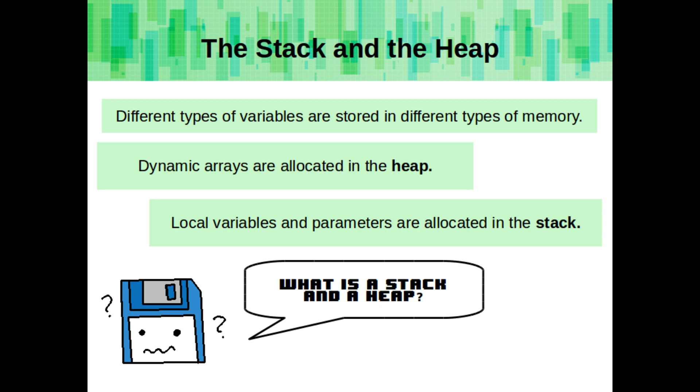Different types of variables are stored in different types of memory. Dynamic arrays are allocated in the heap, and local variables and parameters are allocated in the stack.